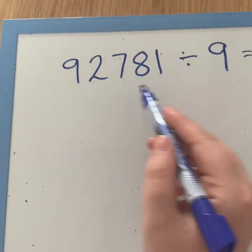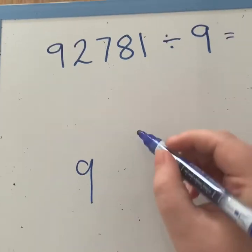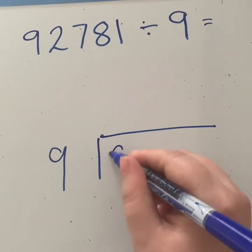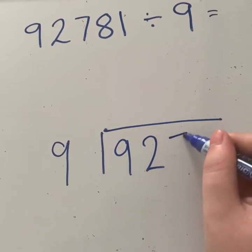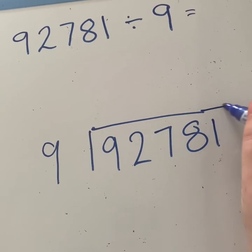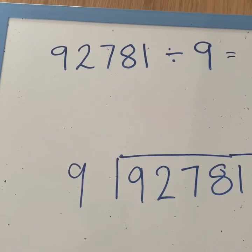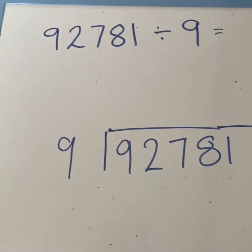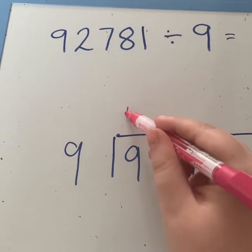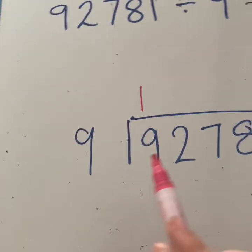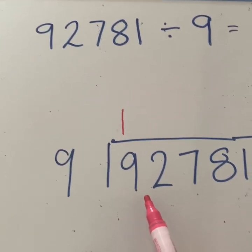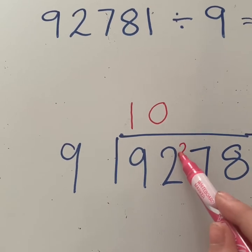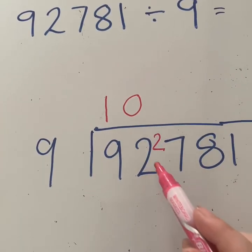So the number that we're dividing into goes on the outside. So we've got 9 here. And then our bus stop. And we've got 9, 2, 7, 8, 1. So now I see how many 9s go into our first number. So 1, 9 goes into 9. And then I move along to our second number. How many 9s go into 2? 0.